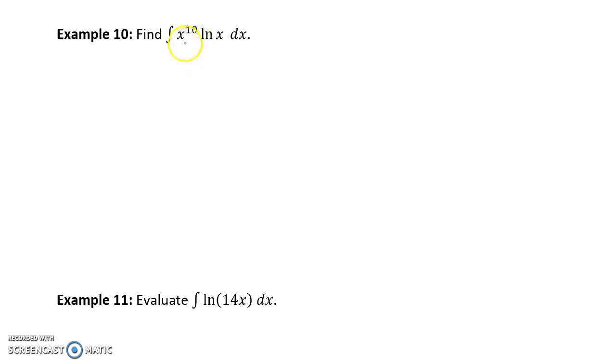So in example 10, we have x to the 10th times the natural log of x, meaning we have the product of two functions, and we have a log function. So since there's a log function, that's our best choice for u, which means that dv will be whatever is left over. So in this case, x to the 10th dx.